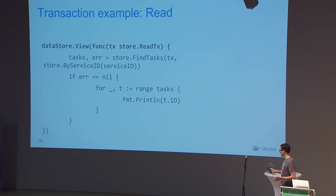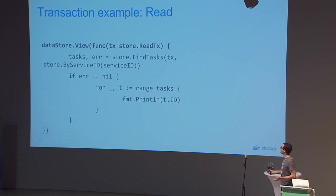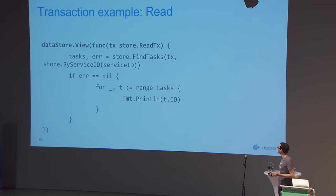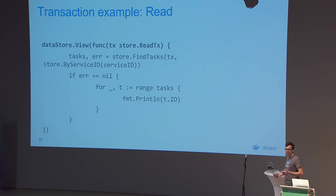Here's a read transaction example: you call a view function and pass it a callback. That callback gets a transaction — a consistent view of the data store at that time. Here it finds tasks with a certain service ID using the by-service-ID selector, then loops to print out the task IDs.